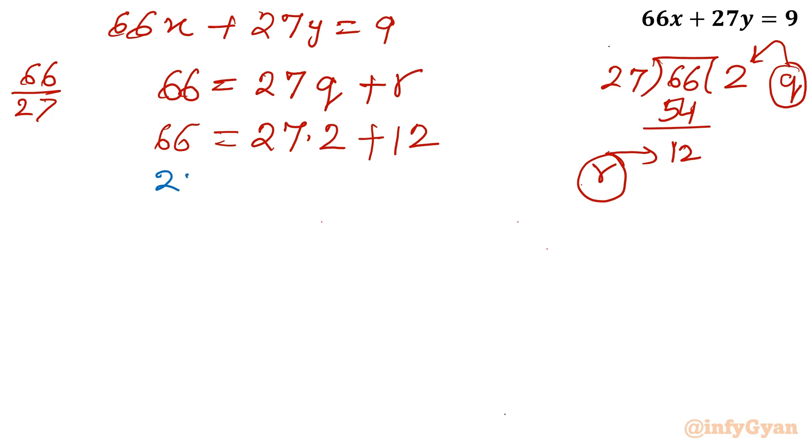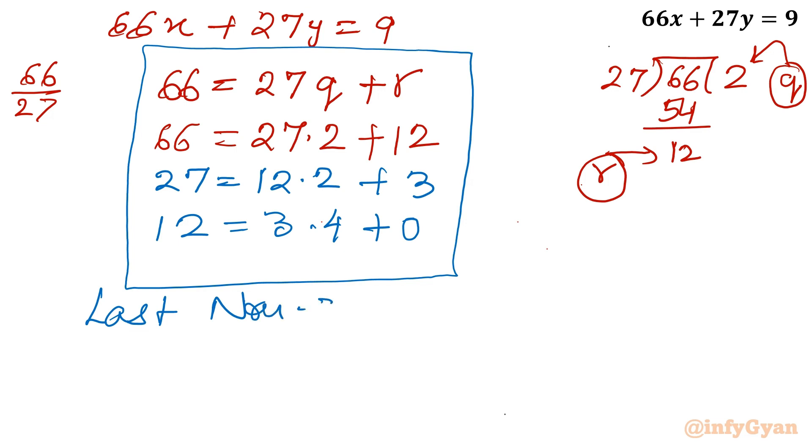So I will write here 27. Now I will write 12 times 2 plus 3. Now I will write here 12, then I will write here 3 times 4 plus 0. Now in this practice, what is GCD? The last non-zero remainder. Last non-zero remainder is our GCD. So GCD equal to 3. This is using Euclidean algorithm. Now once GCD is known, we have to acquire the path of reverse order.